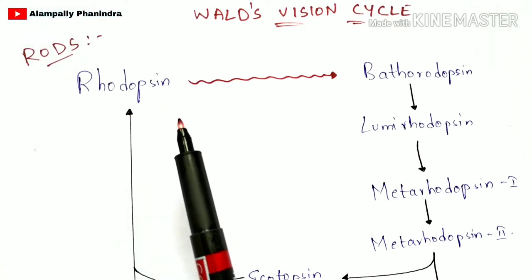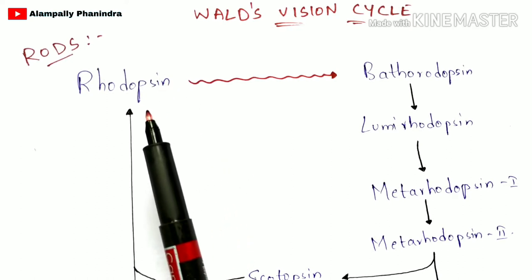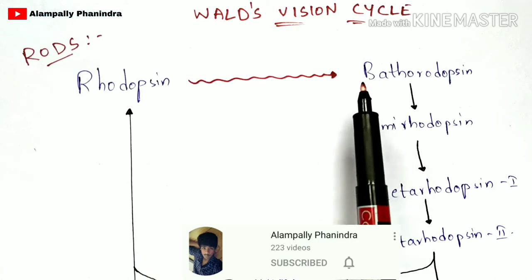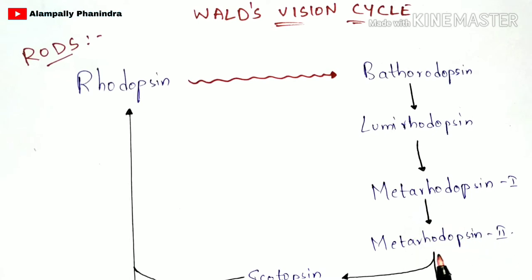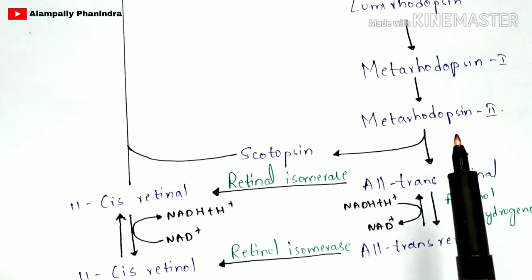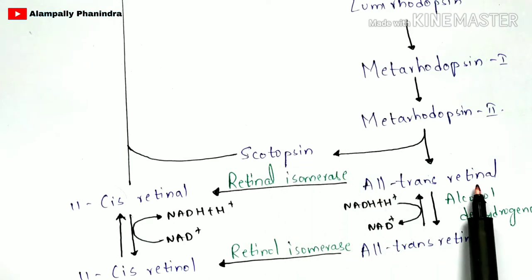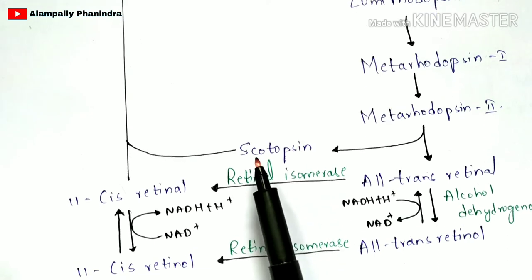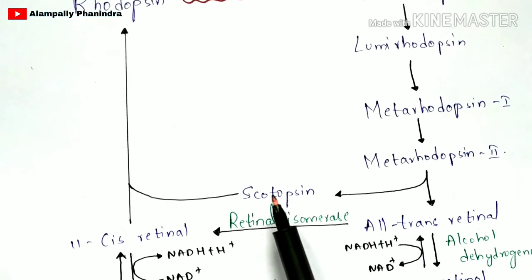In the rods, the pigment is rhodopsin. When light falls upon the eyes, the rhodopsin pigment will grasp that light and get activated. When rhodopsin gets activated, it converts into bathorhodopsin. Bathorhodopsin converts into lumirhodopsin, lumirhodopsin converts into metarhodopsin 1, and metarhodopsin 1 converts into metarhodopsin 2.